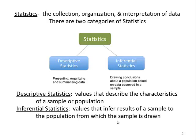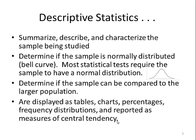So we run descriptive statistics so that we can describe the characteristics of our sample and infer that to the larger population. In inferential statistics, these are values that infer those results to the larger unknown population from our sample results. We summarize, describe, and characterize the sample being studied. We determine if that sample has a normal distribution or bell curve, and most statistical tests require that sample to have a normal bell curve shape. We determine if the sample can be compared to the larger population, and we display descriptive statistics as tables and charts, percentages, frequency distributions, and we report variability and measures of central tendency.